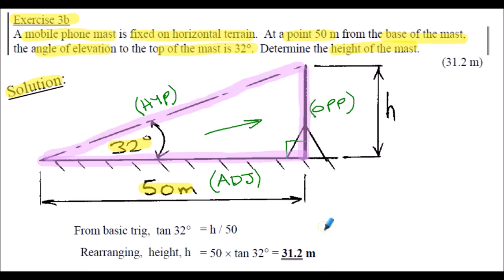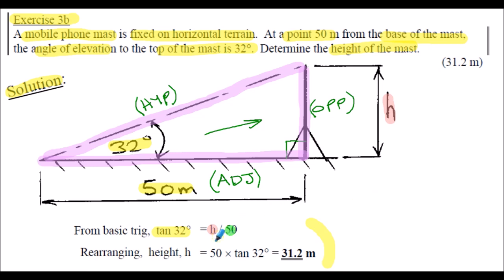I'll let you work through the solution at your own pace. Using the tangent ratio, tan(32°) equals the opposite side h divided by the adjacent side 50. Simply rearranging the equation to find height h gives 31.2 metres.